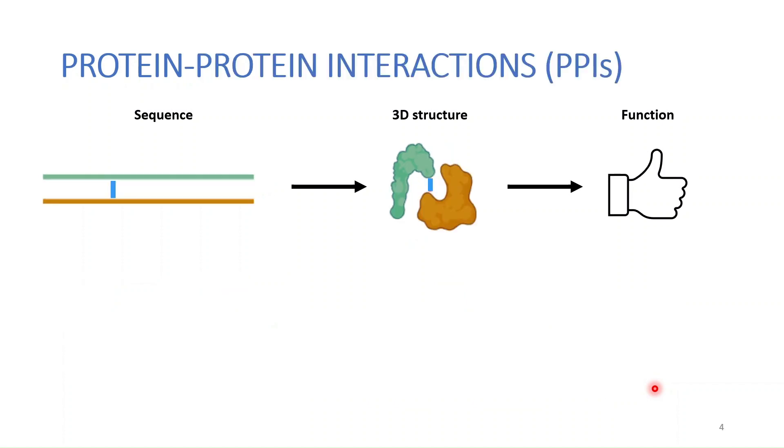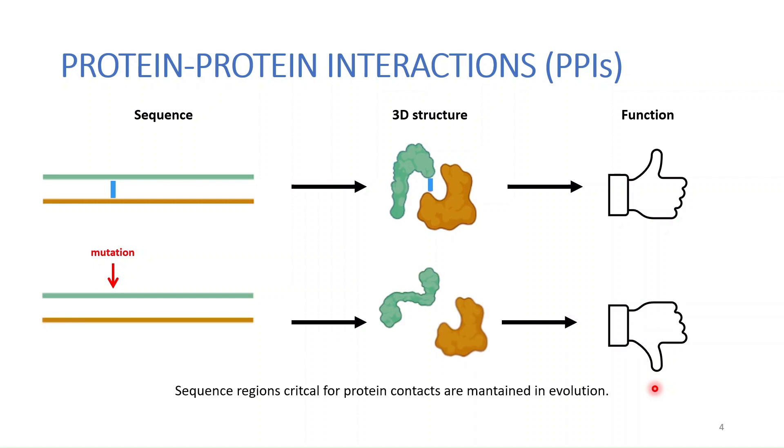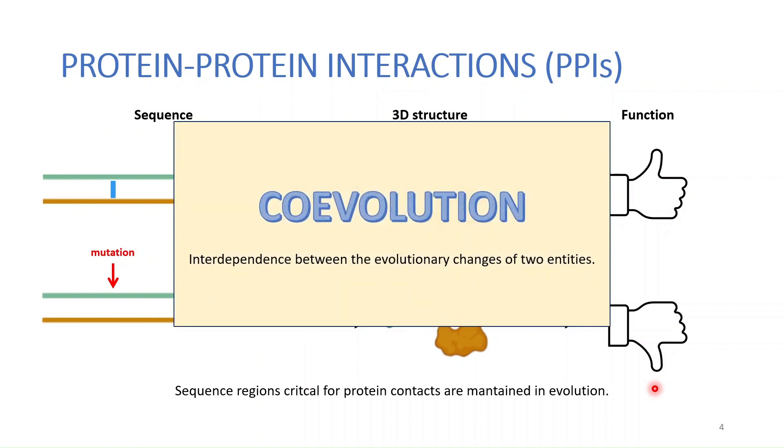Now we can apply the same principle to protein-protein interactions because these are just physical interactions between two structures. Again, if we were to introduce a mutation in one of those sequences, one of the structures will be altered and the function won't be carried out correctly. These sequence regions that are critical for maintaining protein contacts must be maintained in evolution. In other words, they have to undergo co-evolution.